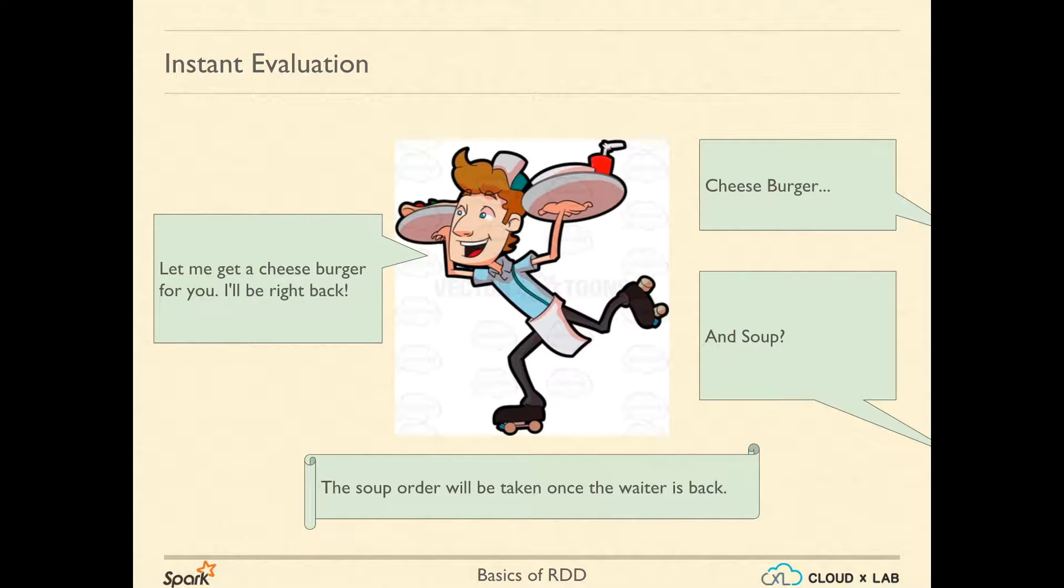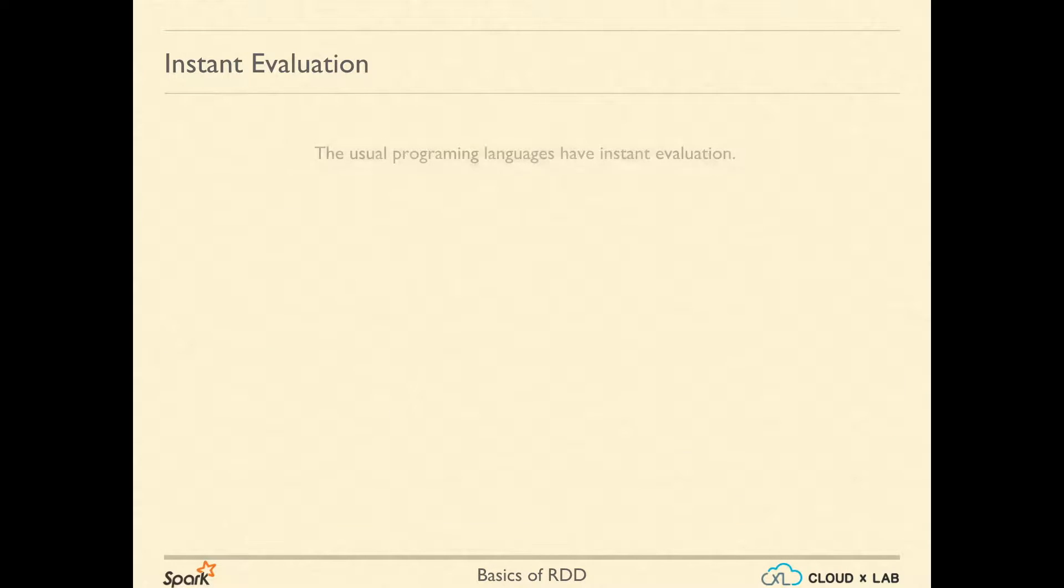This would lead to duplicate effort in soup and noodles apart from efforts in going to the kitchen again and again. In a similar way, the lazy evaluation helps Spark club and optimize multiple transformations together. The usual programming languages, including Scala, have instant evaluation.